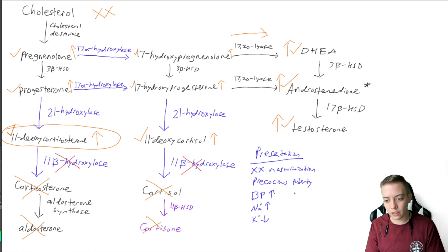And then just so that we have this here, our aldosterone levels are going to be low. Our cortisol levels are going to be low. And our androgen levels are going to be high. And so this is what we are going to see with deficiencies in 11-beta-hydroxylase.